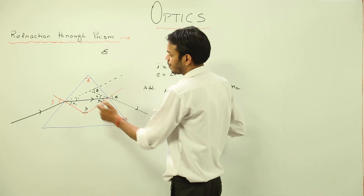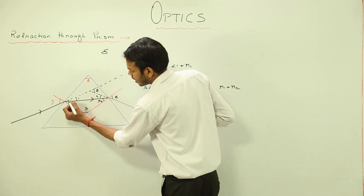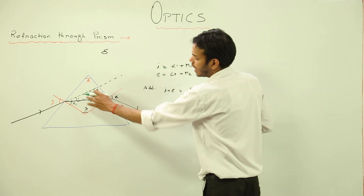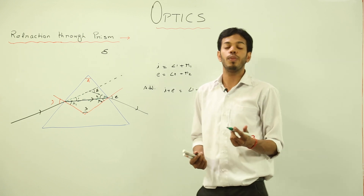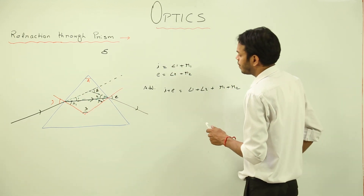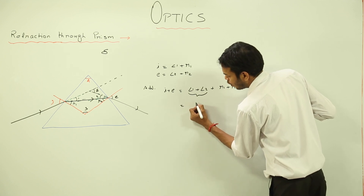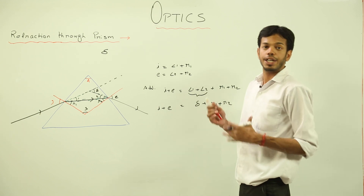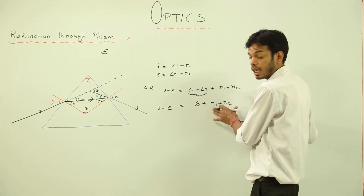Now, what is angle 1 plus angle 2? Focus on this triangle — angle 1 and angle 2 are basically the two interior opposite angles of delta. By the exterior angle theorem, the external angle of a triangle equals the sum of the two interior opposite angles. So delta is equal to angle 1 plus angle 2. Therefore, instead of angle 1 plus angle 2, I can write delta, giving: i plus e equals delta plus R1 plus R2.